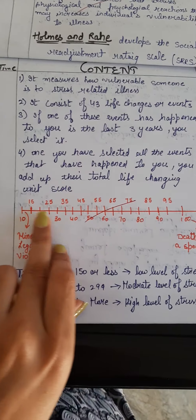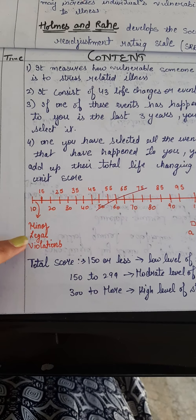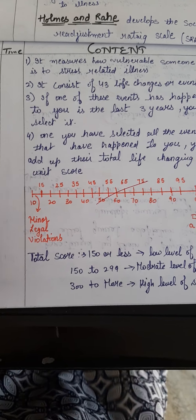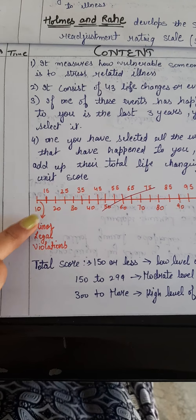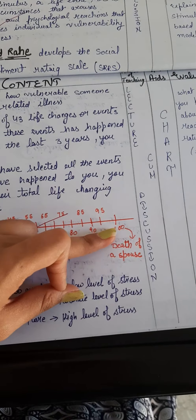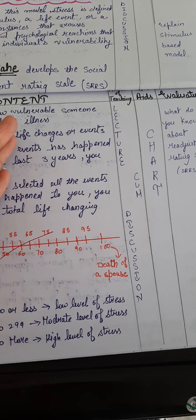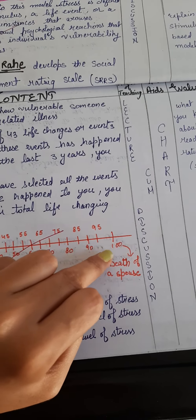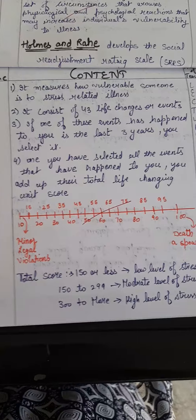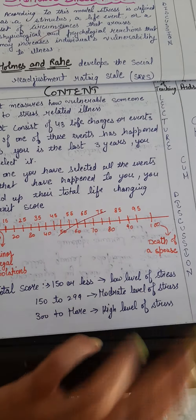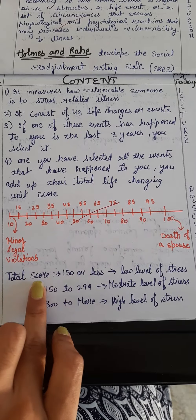If the patient reports minor issues — for example, minor legal violations, fights, home quarrels — then we consider it a score of 10 points. If the patient says there was a death of a spouse six months ago, then we consider it 100 score points. Using this scale, you can ultimately know the level of stress. Is it severe, moderate, high, or low? All scores are added to get a total.